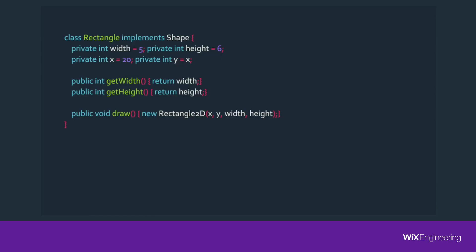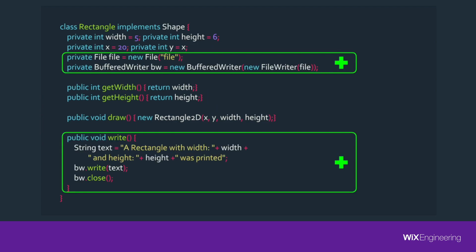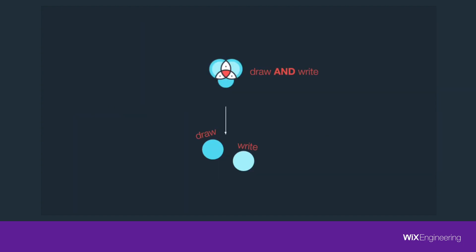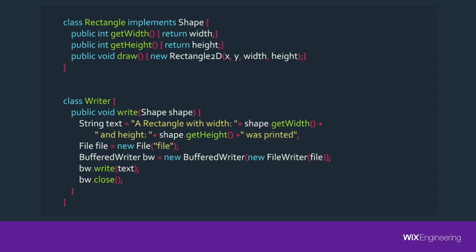This code was absolutely fine until the day I wanted to add a write method to the shape. I want that write method to write the shape into a file. Now our shape is doing two entirely separate things — drawing and writing. When the latter changes, the whole class is compromised, despite the fact that the drawing was the same. The solution is to make drawing and writing two separate classes. Thanks to this separation, it will be easy to change shape whether writing or drawing logic needs to be changed.